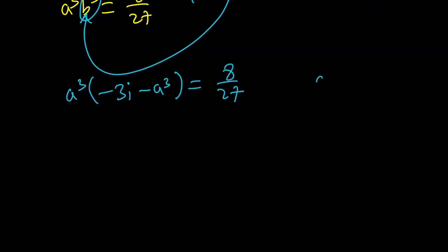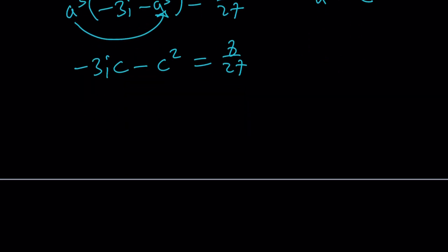We get the following. At this point, let's go ahead and set A cubed equal to C, and then A cubed times A cubed is going to be A to the 6, which is C squared. So it's going to look like this: negative 3i C minus C squared equals 8 over 27. Let's put everything on the right-hand side so that we get a positive leading coefficient and a full quadratic with imaginary coefficients.